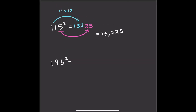Now we're going to do the same for this question. Again, we're going to do 5 squared, which is obviously going to be 25. And then we've got to do 19 times its next highest number, which is 20. So we're going to do 19 times 20. To make this a little bit easier, let's do 19 times 2, which is 38, and then times that by 10, which is 380. So that gives us an answer of 38,025.